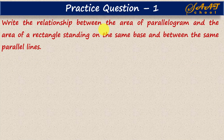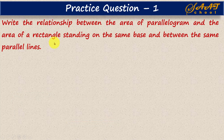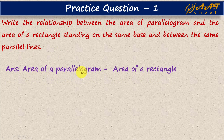Here is Practice Question 1 based on Theorem 1. We have to write the relationship between the area of a parallelogram and the area of a rectangle standing on the same base and between the same parallel lines. The key point to note is that a rectangle is also a parallelogram. So from Theorem 1, if they are standing on the same base and between the same parallel lines, their areas are equal. Therefore, area of parallelogram equals area of rectangle.